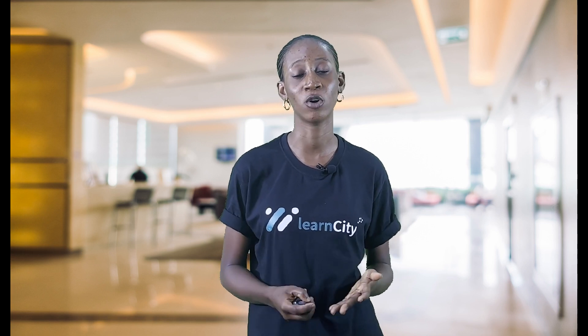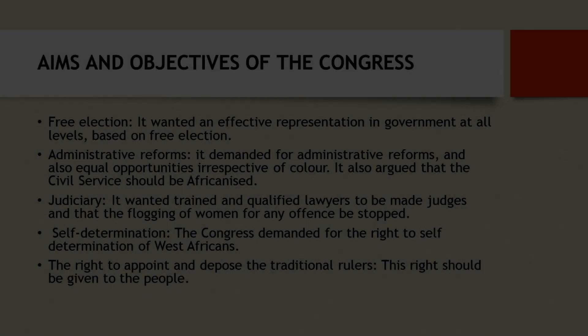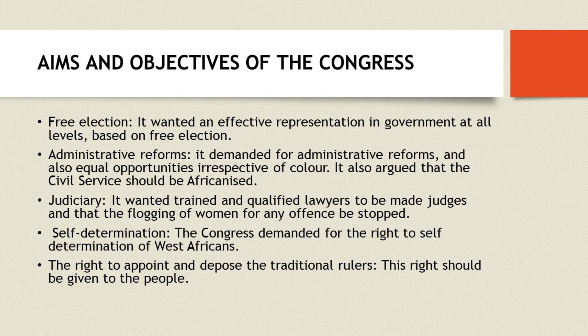The aims and objectives of the National Congress of British West Africa: the first was free elections. They wanted effective representation in government at all levels based on free elections. They did not want the governor to appoint people based on his own free will; they wanted elections so that there would be effective representation in government at all levels.